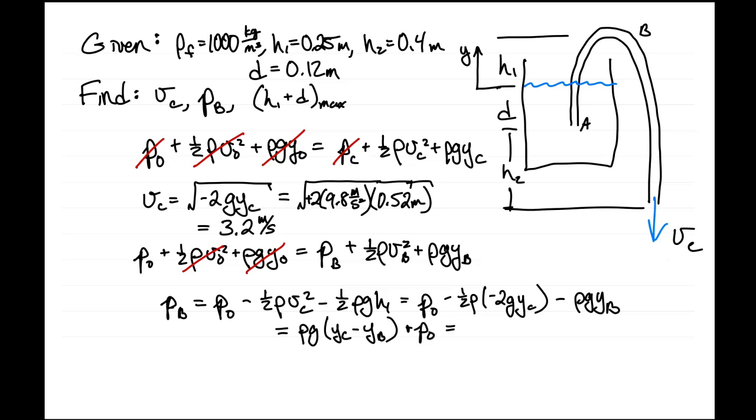And that is 1000 kilograms per meter cubed, and that is 9.8 meters per second squared. Yc is -d - h2, YB is h1. And so using those all together, you get -0.77 meters. Plugging that in the calculator and using atmospheric pressure, we get that the pressure at point B is 92 kilopascals.